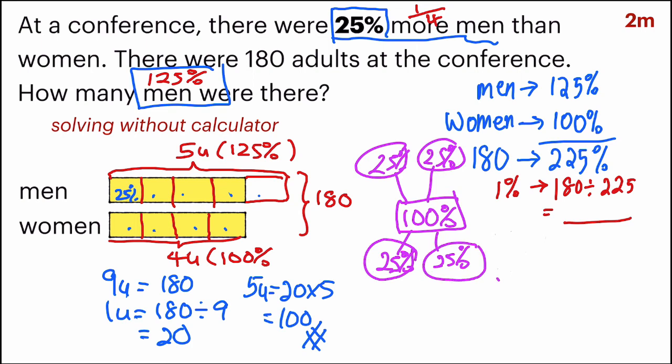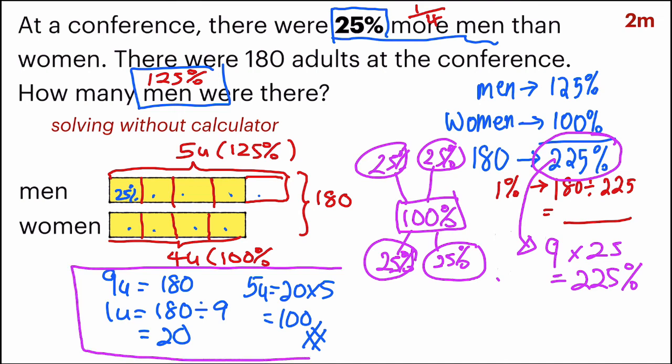So some of you can easily see that in 225%, how many sets of 25 there are? There are nine. Because nine times 25 gives you 225. So you can separate it into nine units and the method will be the same as this.